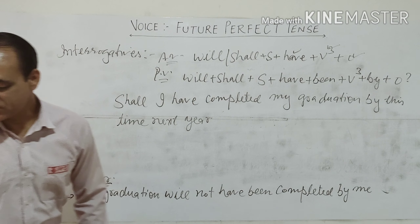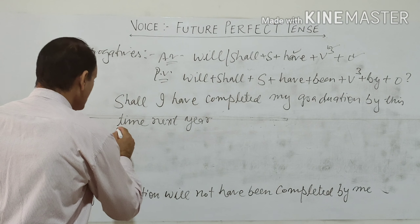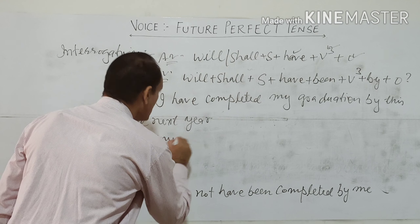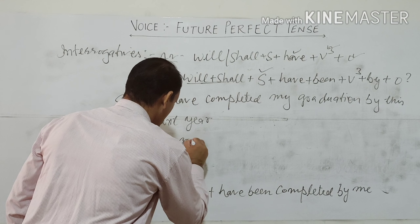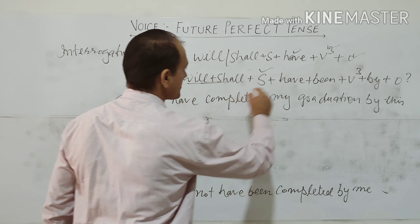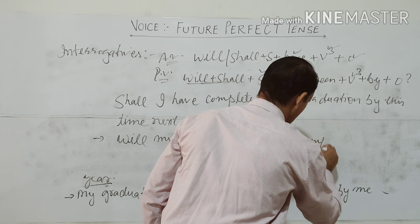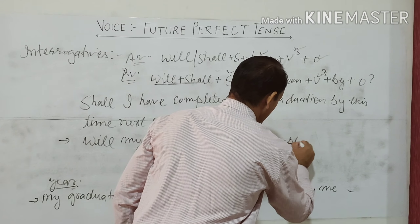Now when we change it into passive voice, we first bring the object into the place of subject. Since this is passive voice and our subject is third person, we start with will. The structure becomes: Will my graduation have been completed by me by this time next year?